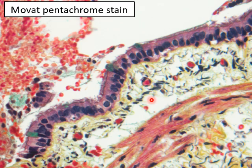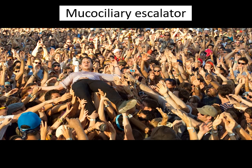The Movat pentachrome stain also shows the smooth muscle layer separating the mucosa above from the submucosa below. The mucociliary escalator is an important concept: cilia beat in unison in one direction, carrying dust particles and debris up and out of the lung — opposite to the direction of incoming airflow. Material is carried up to eventually be swallowed or expelled.